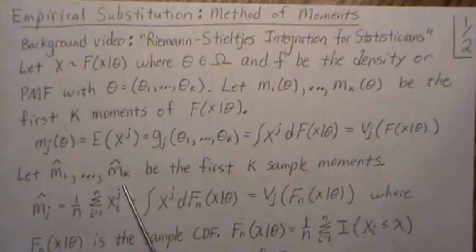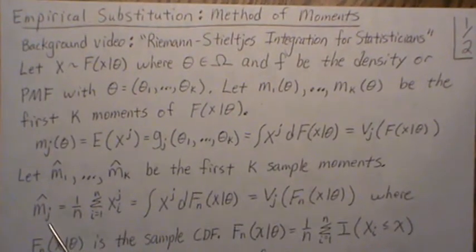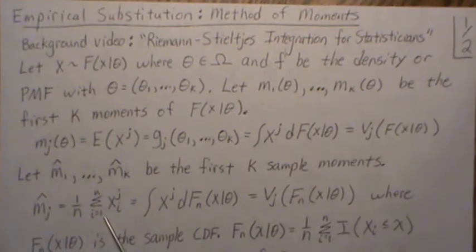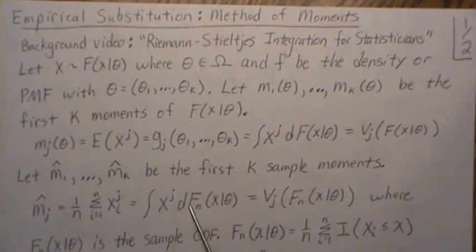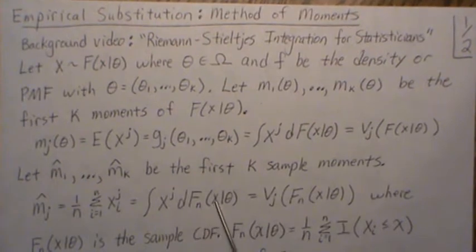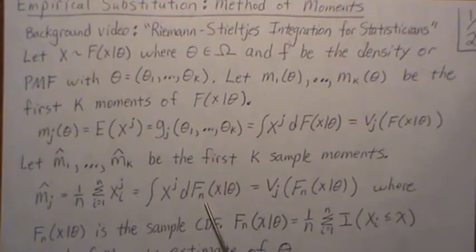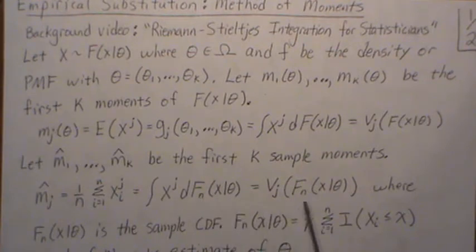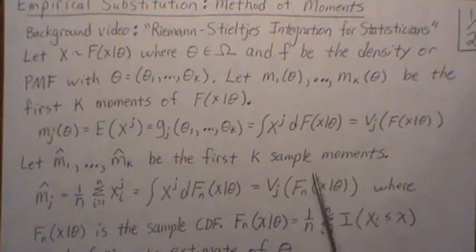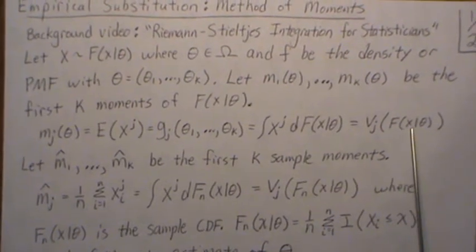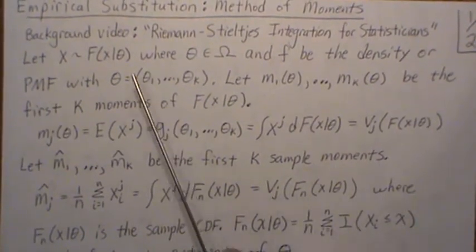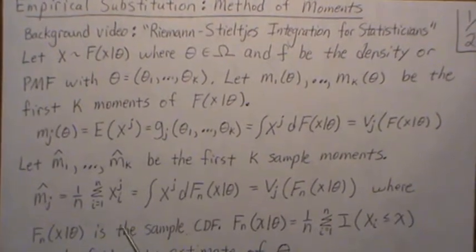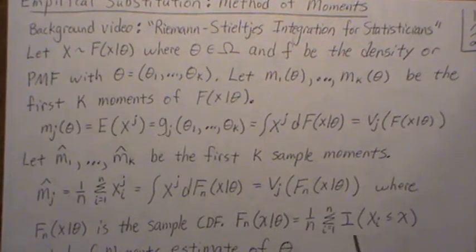Let m̂₁ all the way up to m̂ₖ be the first k sample moments, so mⱼ hat is 1 over n sum of the xᵢ raised to the jth power. In Riemann-Stieltjes notation it's this, where Fₙ(x) is the sample CDF or the empirical CDF. This is a function of that empirical CDF, so it's actually the same function, but here we plug in the population CDF and here we plug in the sample CDF. Again, that's going to play a part in empirical substitution. Fₙ is the sample CDF defined like this: it counts the number in our sample less than that x value.